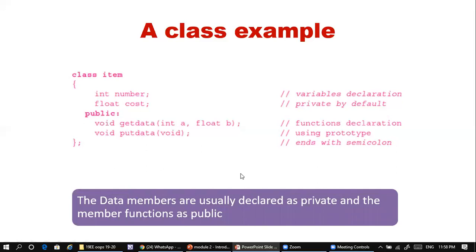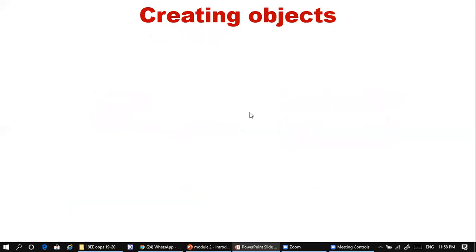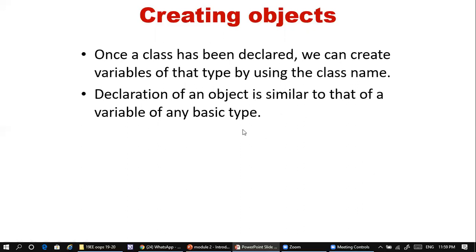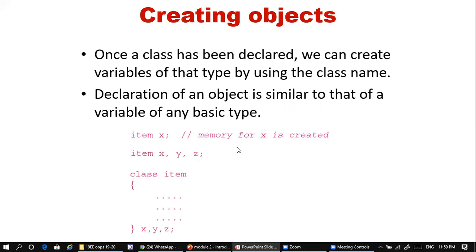Data members are generally declared as private and member functions as public. Now, how to create an object: once a class has been declared, we can create variables of that type using the class name. Declaration of an object is similar to declaring a variable of any basic data type — just like any other variable, except for a class this variable is called an object.